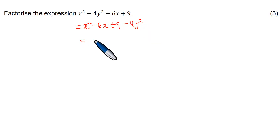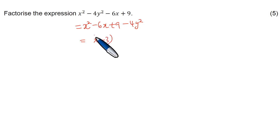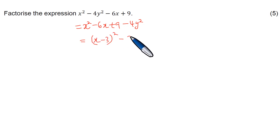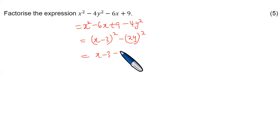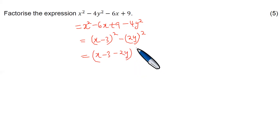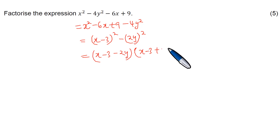From this, we obtain x minus 3 all squared minus 2y all squared, from which we are able to obtain x minus 3 minus 2y, into x minus 3 plus 2y.